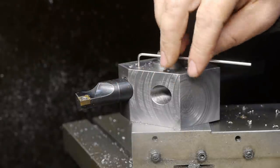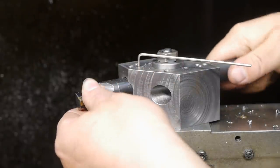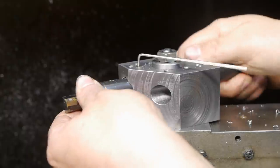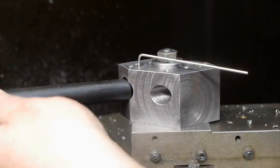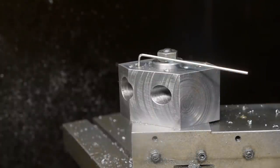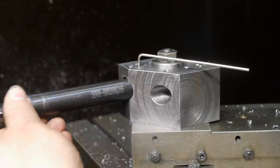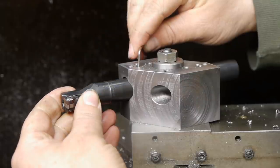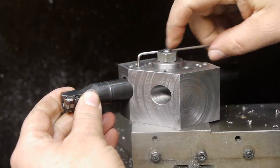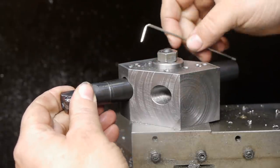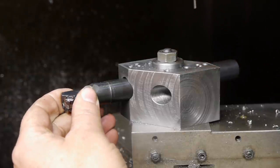Now it's time to replace the boring bar with the threading bar. I'll tighten up the set screws later when I've determined the amount of stick out that's needed.